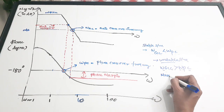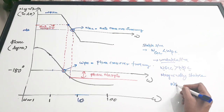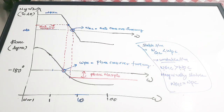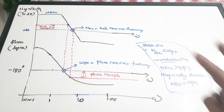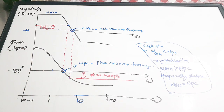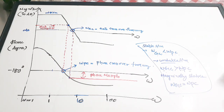For a marginally stable system, WGC equals WPC. After drawing the Bode plot, take the values for gain crossover frequency from the magnitude plot and phase crossover frequency from the phase plot, then compare them. If WGC is less than WPC the system is stable; if greater, it is unstable; if equal, marginally stable.